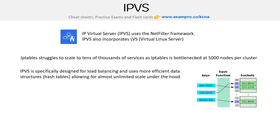IPVS is specifically designed for load balancing and uses more efficient data structures — hash tables. I think I called it hash mapping earlier, but it was supposed to say hash tables on the right-hand side here, allowing for almost unlimited scale under the hood. If you've never heard of hash tables, we describe it in cryptographical stuff like in my SC 900 course.